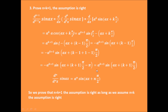This result is exactly the same as what we get from the assumption statement when n equals k plus 1. So we prove that when n equals k plus 1, this assumption is right, as long as we assume when n equals k the assumption is right. Based on these three steps, we prove that the nth order derivative of sine ax indeed equals a to the power of n times sine of ax plus n pi divided by 2.